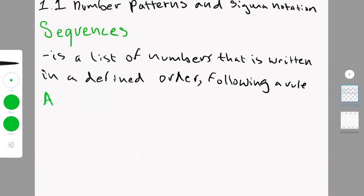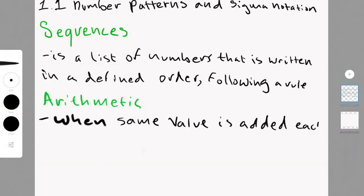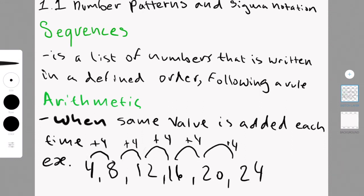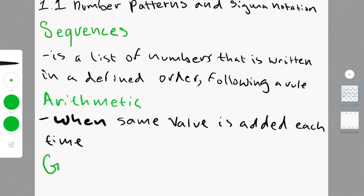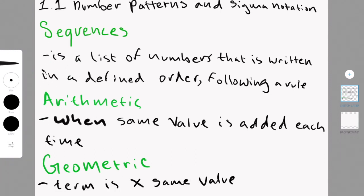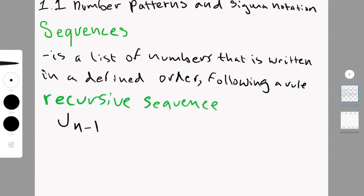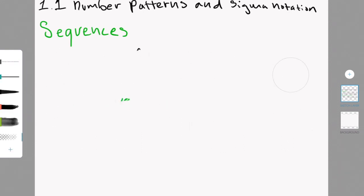An arithmetic sequence is when the same value is added to each term to get the next term. In this example, a 4 is added each time to get the next term. A geometric sequence is when each term is multiplied by the same value to get the next. A recursive sequence is when you use the previous term or terms to find the next term. This is noted, or the notation for this is U, N minus 1. Because the N is what term it is, so the term minus 1 would be the previous term.